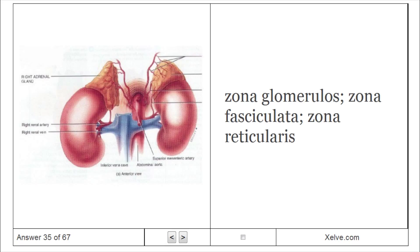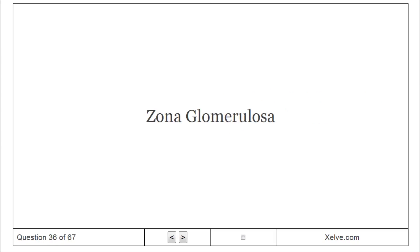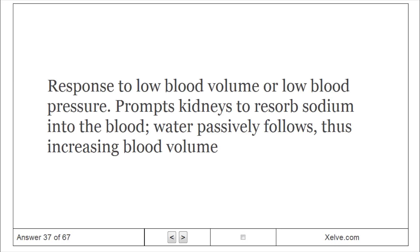Zona glomerulosa produces mineralocorticoids, aldosterone. In response to low blood volume or low blood pressure, prompts kidneys to reabsorb sodium into the blood. Water passively follows, thus increasing blood volume.